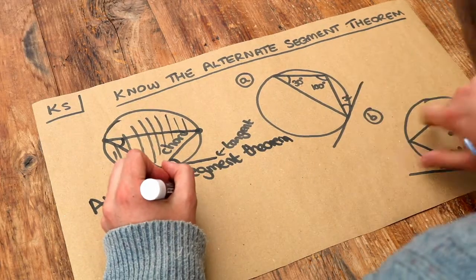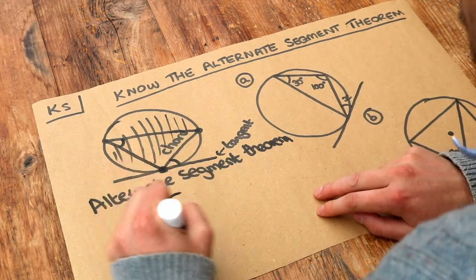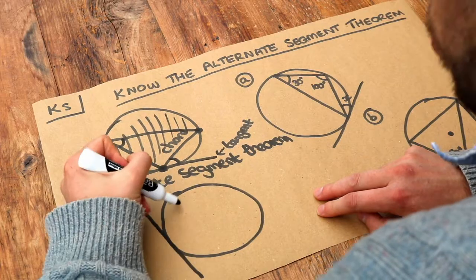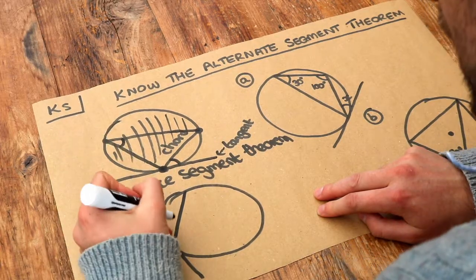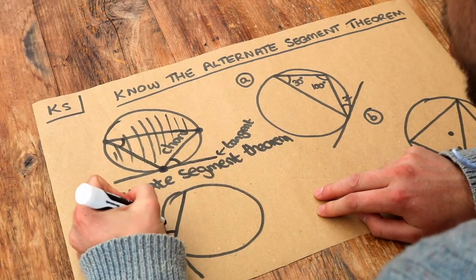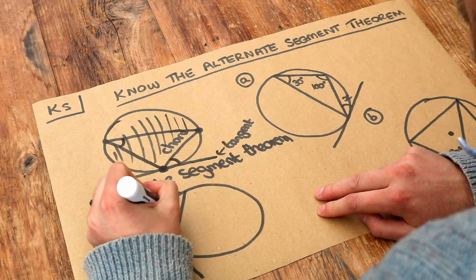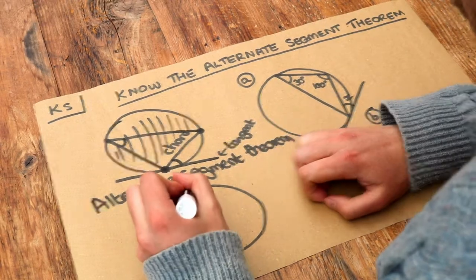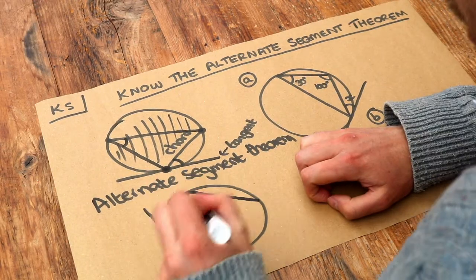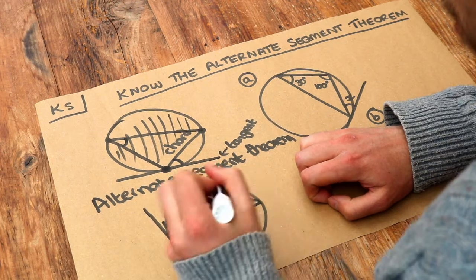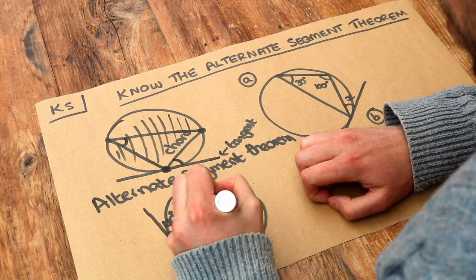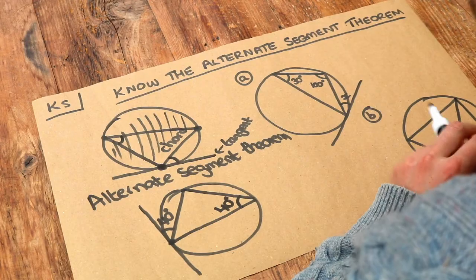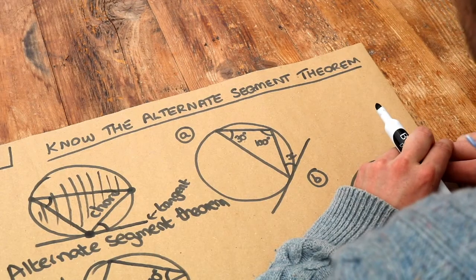Just a very quick example: if I have a tangent and a chord, and let's say that angle is equal to 40 degrees, then if I fire from the two ends of this chord into the circle to meet at the circumference, that angle there would also be 40 degrees.